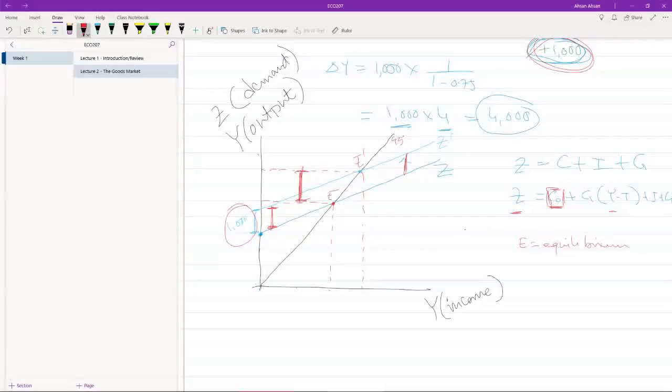But because of that, the first thing that happened is that the demand curve shifted up, which meant that the autonomous spending part became larger. But what also happened is that output in the economy increased, and it did not increase by a thousand - it increased by four thousand.